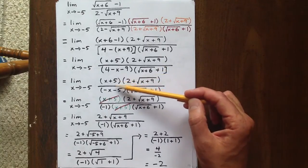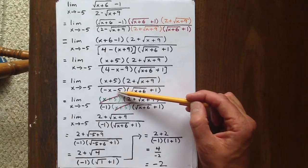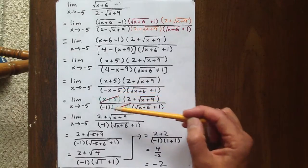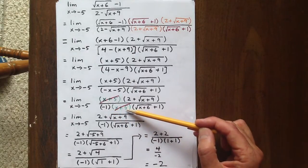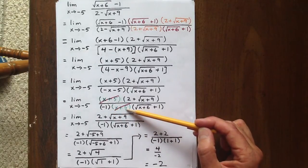x plus 5 stays x plus 5, 4 minus x minus 9 becomes negative x minus 5. We can factor negative 1 out of that, and we're left with a second factor of x plus 5.